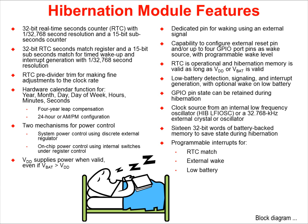The real-time clock pre-divider trim can be used for making fine adjustments to the clock rate. The module features hardware calendar functionality for tracking year, month, day, day of week, hours, minutes, and seconds, with leap year compensation and 24-hour or AM/PM configuration.